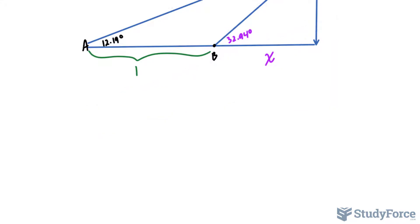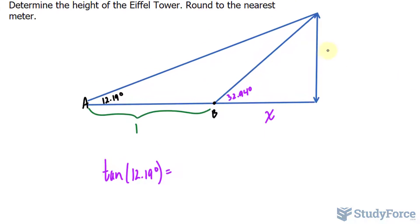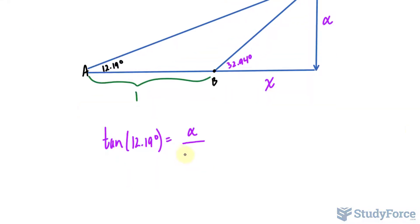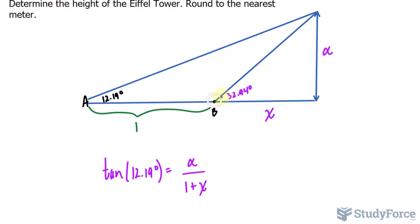The trigonometric ratio that relates opposite to adjacent is tangent. So I'll write down tangent of my angle, 12.19 degrees, is equal to the opposite. Let's call this alpha, or you can call it any letter that you like, and the adjacent is one plus x. I'll create a second equation, but this time relating this smaller triangle and use the exact same variables to help me solve.